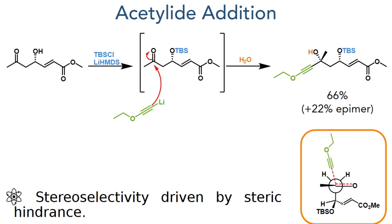In the next step of the synthesis, the hydroxyl group was first silylated using TBS chloride and lithium HMDS, and after stirring the reaction mixture for two hours, lithium ethoxyacetylide was then added. This adds to the ketone, forming a carbon-carbon bond, and the alkoxide is protonated upon workup to form a hydroxyl group, generating the product in a 66% yield with a 22% yield of its epimer. The stereoselectivity of this reaction is driven by the steric bulk of the TBS group, and they found that selectivity for the opposite epimer could be obtained using chelation control for this addition.